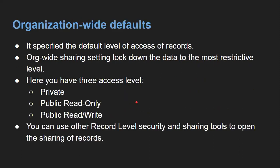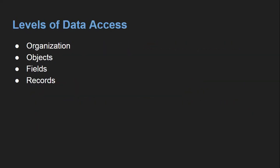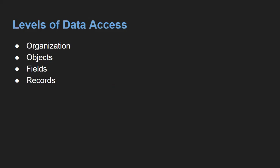So I have explained all four things in data security: organization level security, object level security, field level security, and record level security. This is the complete data security model available in Salesforce. I explained all these things theoretically, but if you want to learn through practical demonstration, I am uploading all related videos in a common playlist — the link is in the description and at the end of this video. Watch the individual demonstration videos to understand these things better. I hope you understood everything I explained. Thank you for watching.